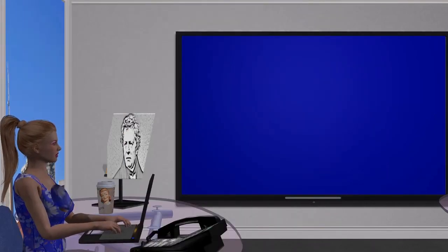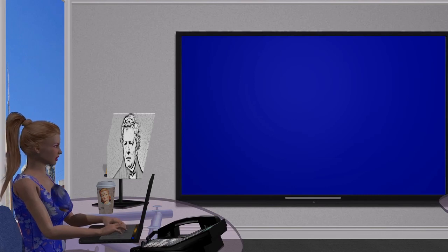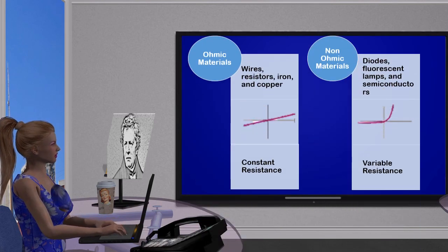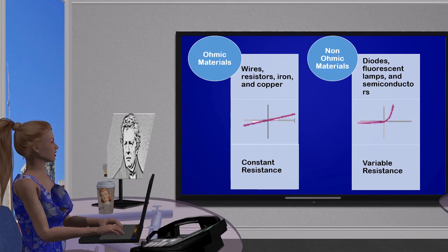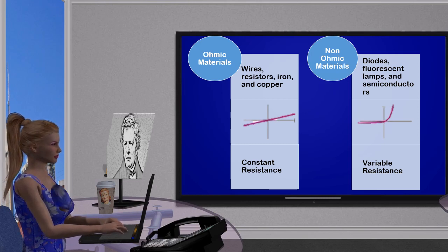Ohm's Law doesn't hold true for all materials. Therefore, there are two types of materials according to Ohm's Law: ohmic and non-ohmic materials. Let's first discuss ohmic conductors or materials.